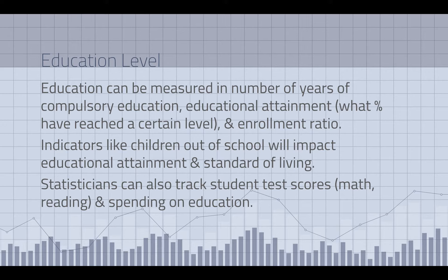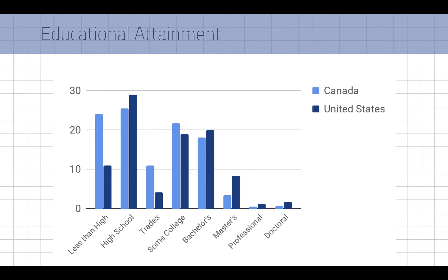We can also look at education levels. If a child has to go to work at 12 years old and is out of school, that will affect their ability to earn later on because they're unlikely to go back. Once people drop out, they're less likely to return for further studies. Another stat is educational attainment — how far do most people go? For developed countries, you might be able to compare standardized test scores like PISA math tests. Ontario tends to do really well among comparable regions. Here's how far people get in Canada: less than high school, high school, trades, some college, a bachelor's degree, a master's degree, professional certification, and a doctoral degree.